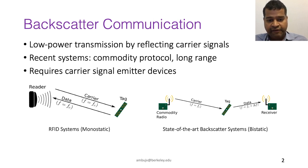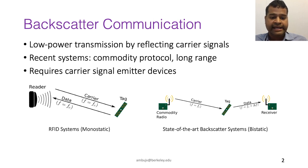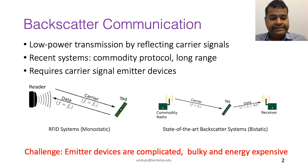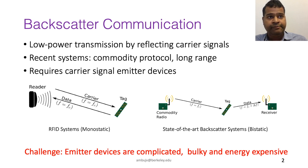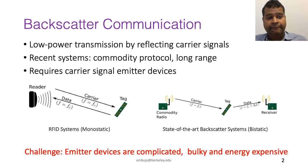In the bi-static configuration, Wi-Fi routers, smartphones, or sensor nodes are used for providing the carrier signal. What we find is that these emitter devices are usually complicated, bulky, or energy expensive, requiring them to operate on external power. This severely limits the application scenarios of backscatter systems.